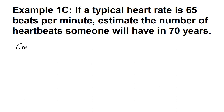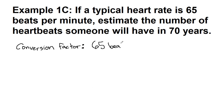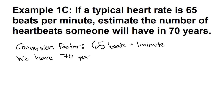We write out the conversion factor specific to this problem, along with any other standard conversions available to us. This problem gives us that 65 beats of time is equivalent to one minute on our clocks — that is a conversion between those two different units. We use the other piece of information as our starting point: 70 years, and we want heartbeats.